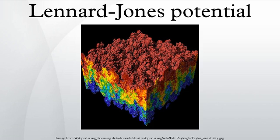The most common expressions of the LJ potential are defined by parameters where ε (epsilon) is the depth of the potential well, σ (sigma) is the finite distance at which the interparticle potential is zero, r is the distance between the particles, and r_m is the distance at which the potential reaches its minimum. At r_m, the potential function has the value −ε. The distances are related as r_m equals 2^(1/6) σ. These parameters can be fitted to reproduce experimental data or accurate quantum chemistry calculations.